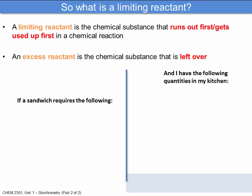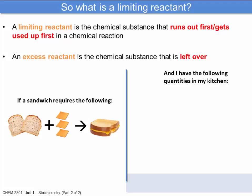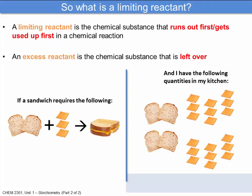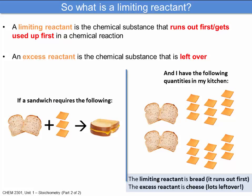We looked at a sandwich example from a previous video. If we had two slices of bread and three slices of cheese, that would create one grilled cheese sandwich. With four slices of bread and six slices of cheese, we could make two grilled cheese sandwiches with lots of cheese left over. So the limiting reactant is bread — it runs out first — and the excess reactant is cheese.